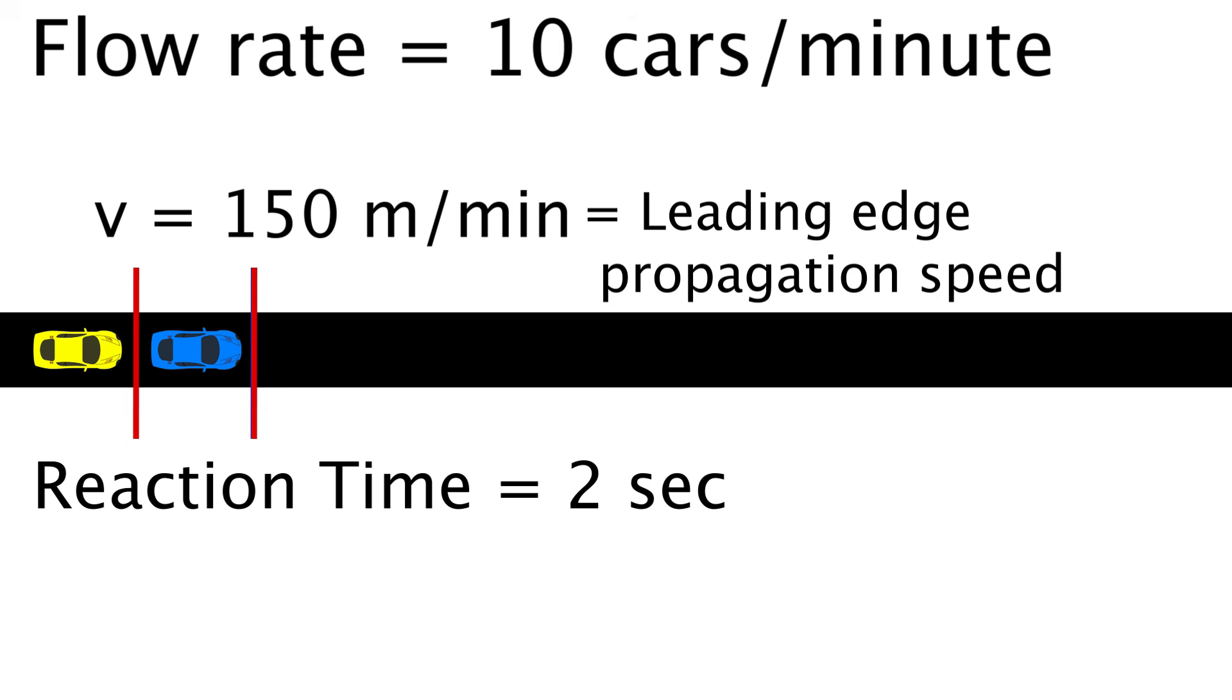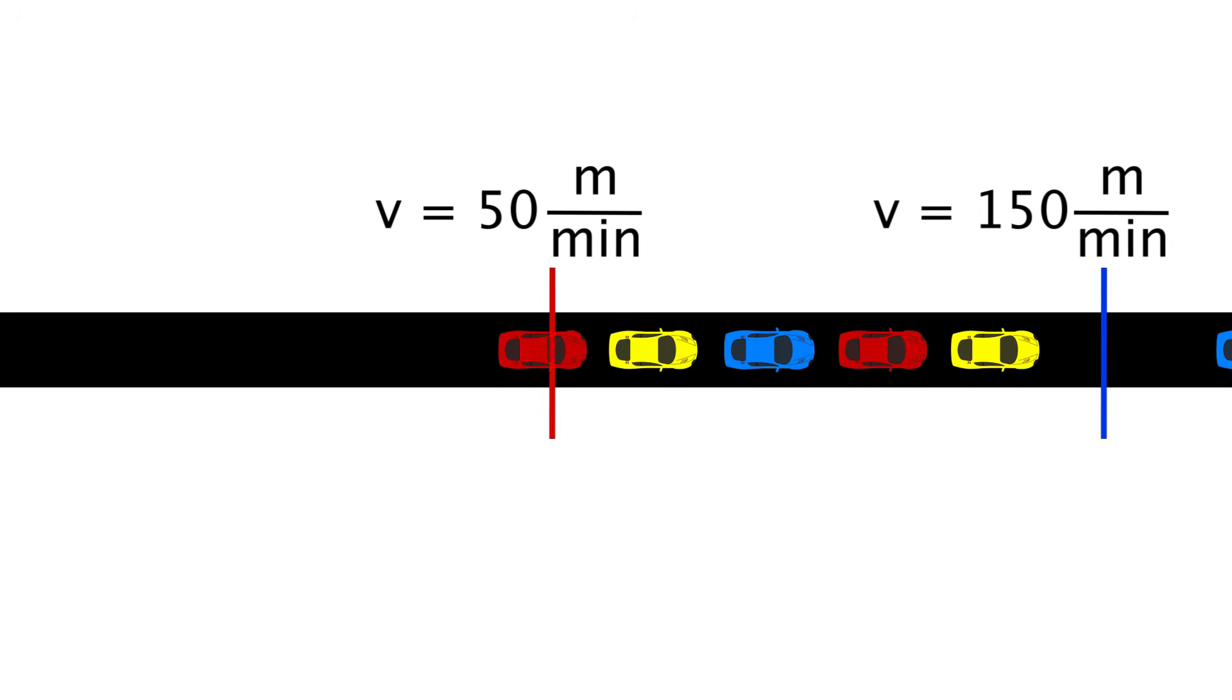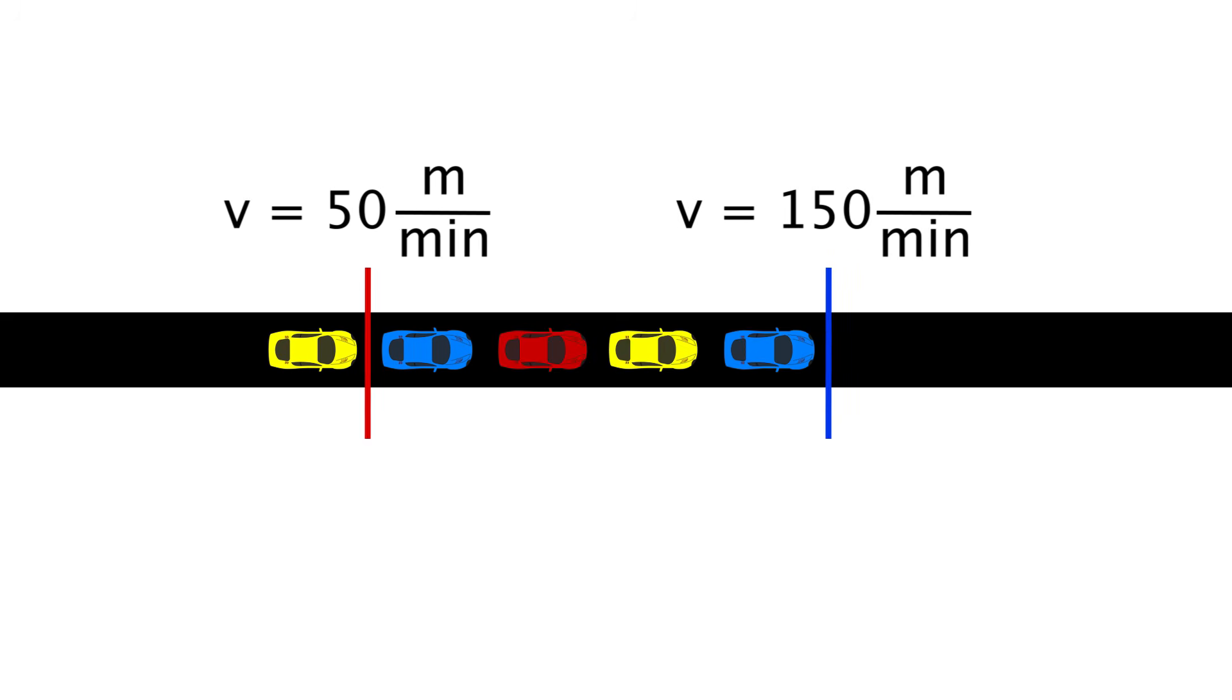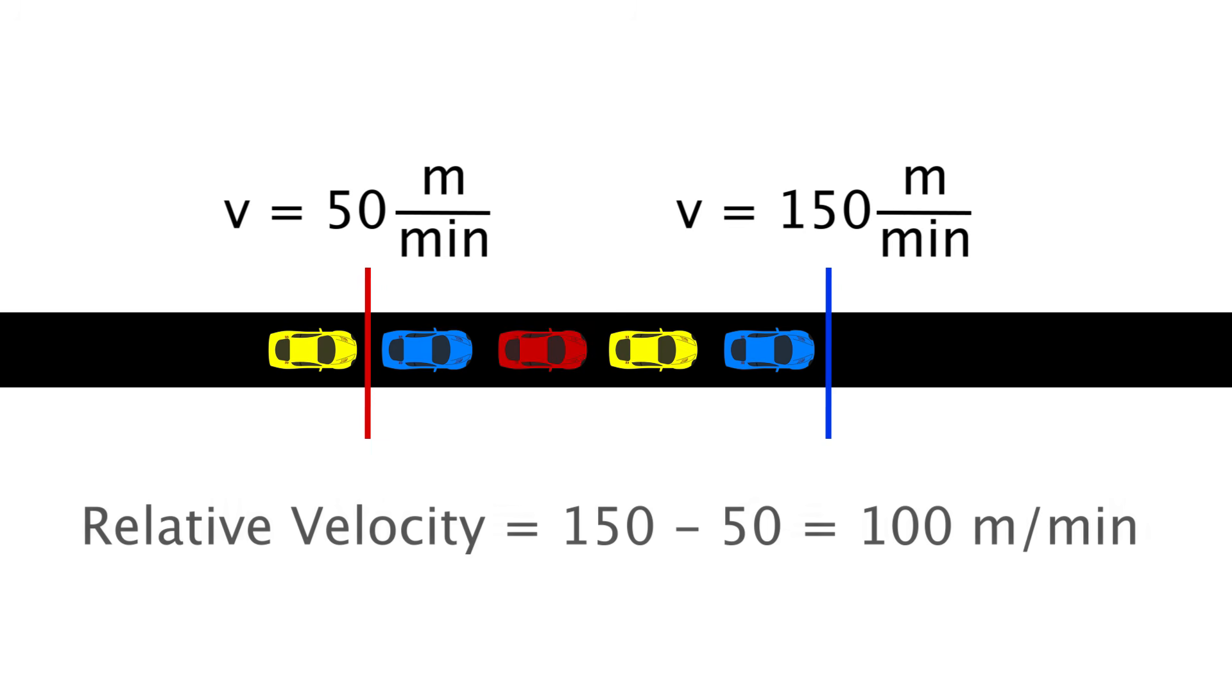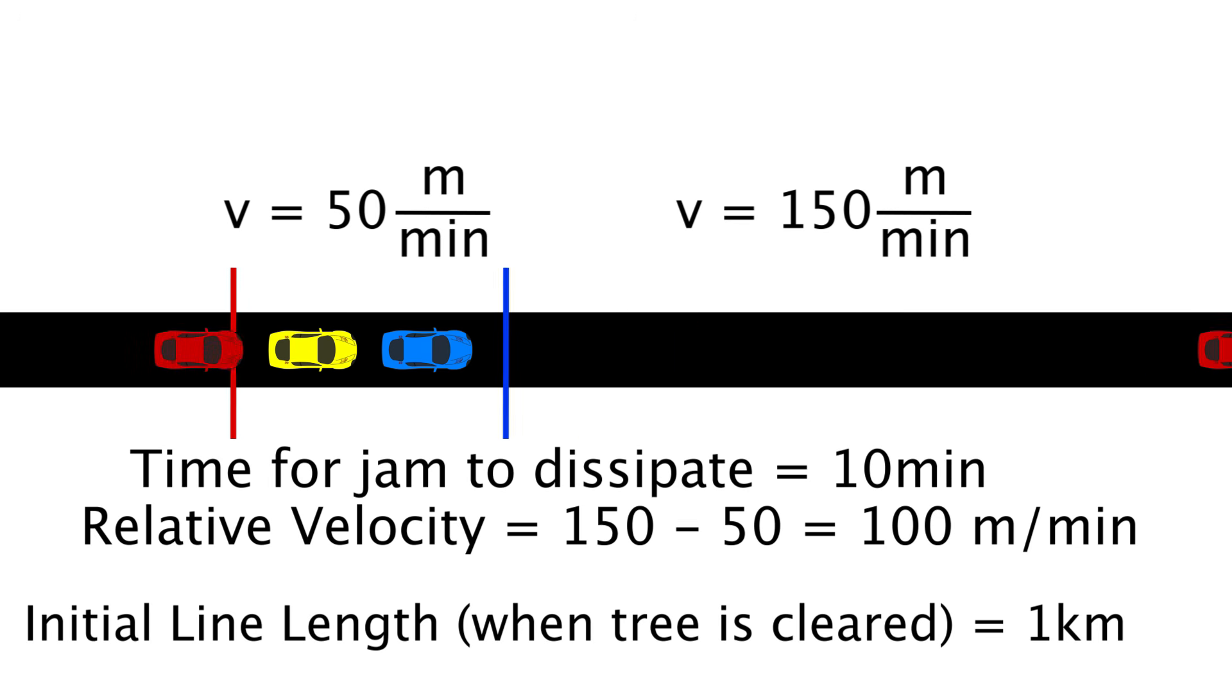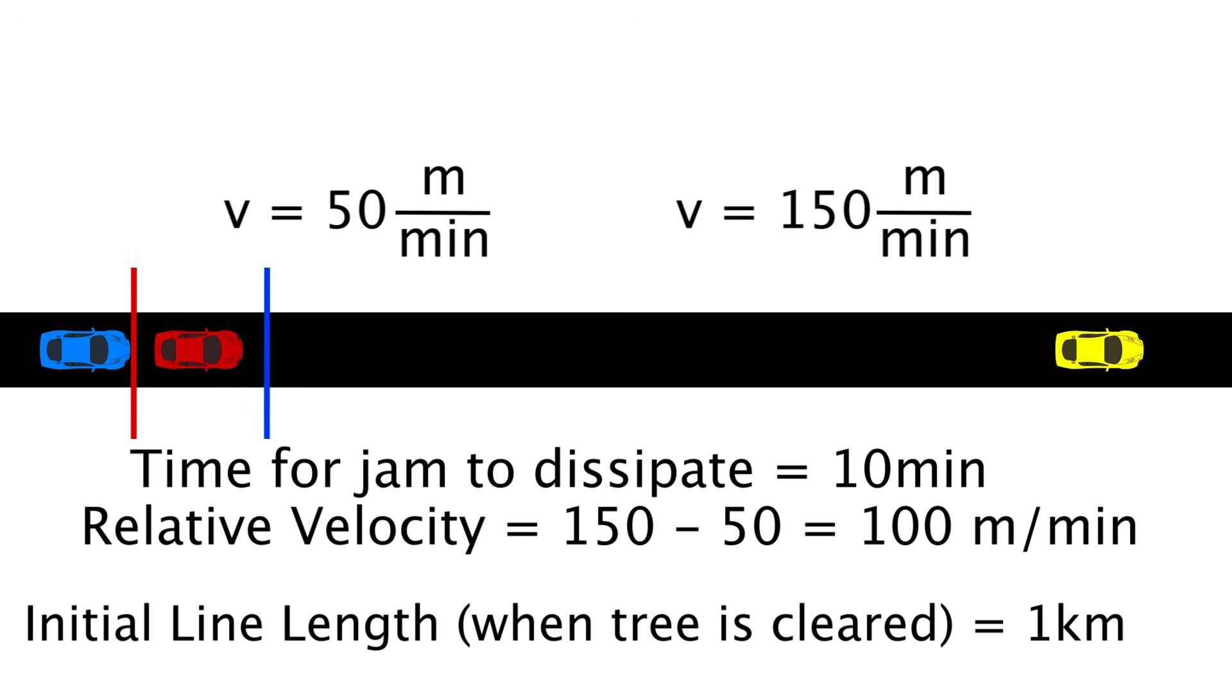But note that cars are still arriving to this traffic jam at the same rate of 10 cars per minute, which we said increases the line's length at 50 meters per minute. That means the front of the jam is approaching the back at a rate of 100 meters per minute. If let's say the line was one kilometer long when the tree was finally cleared, that means it would take 10 minutes for the traffic jam to be entirely cleared and the front line to catch the back.